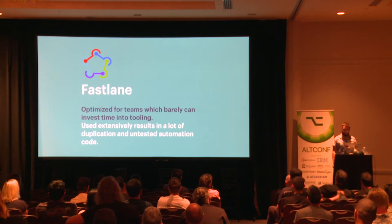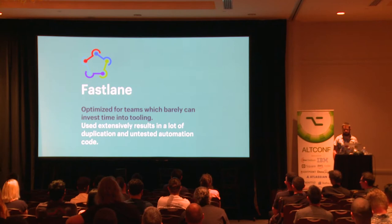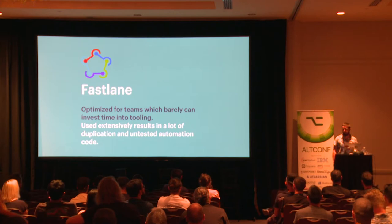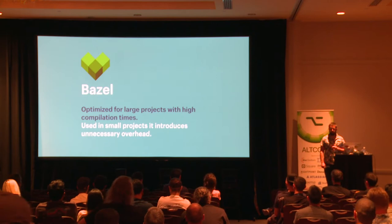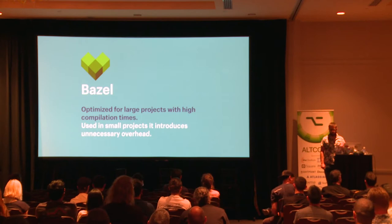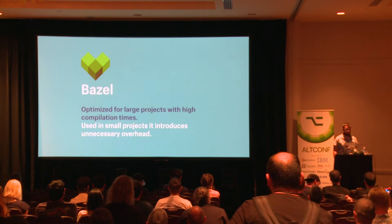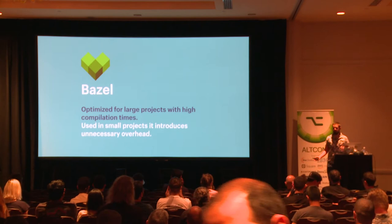Fastlane is mostly optimized for teams that barely have time to invest in tooling—you can easily add Fastlane, add a bunch of lanes, and everything works. But as soon as you start using Fastlane heavily in big companies, you'll end up with super complex Fastfiles that are nothing is tested and really hard to read. Bazel is a build system with incremental compilations across everyone in the team using a cache, but if you try to use it in a small app, it introduces unnecessary overhead. You might need it in the future, but not now.